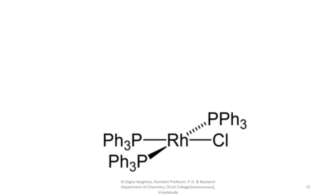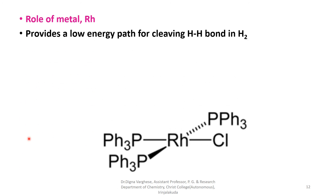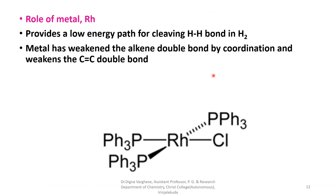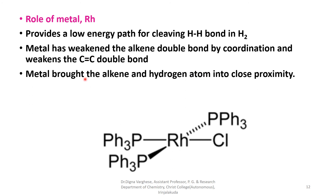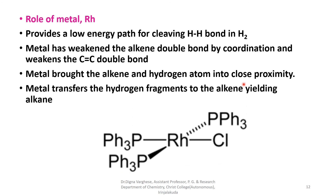What is the role of rhodium metal in Wilkinson catalyst? It provides a low energy path for cleaving the hydrogen–hydrogen bond. The metal weakens the alkene double bond by coordination, weakening the carbon–carbon double bond. The metal brings the alkene and hydrogen atom into close proximity, so the alkene undergoes insertion reaction, and the metal transfers the hydrogen fragments to the alkene yielding alkane.